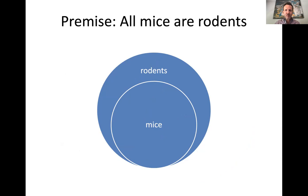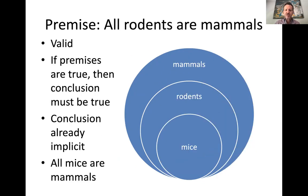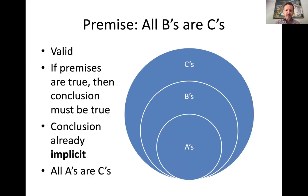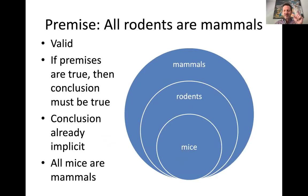Validity is just about the logical relationship between categories, regardless of what they are. In this case the premises are true, so the conclusion is also true. But we add a term for this additional successful feature of a valid argument with true premises: we say it's sound. If the premises were false but the argument was still valid, we'd say it's unsound. If the argument had true premises but bad logic — invalid — that would also make it unsound. An argument is unsound if it's either invalid or has any false premises; it's sound only if it's both valid and has all true premises.